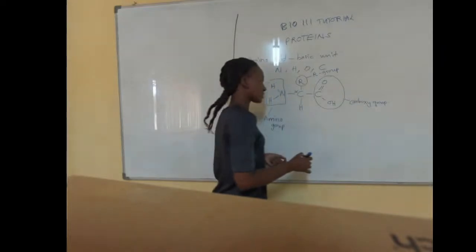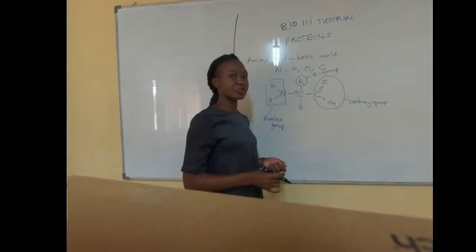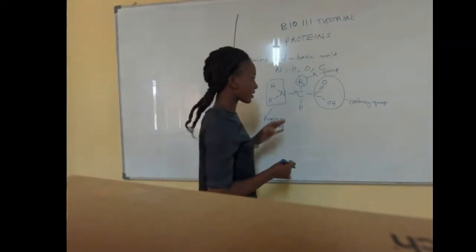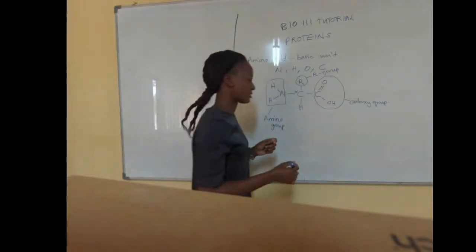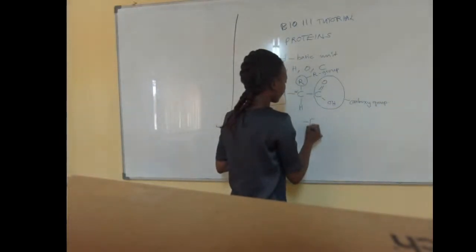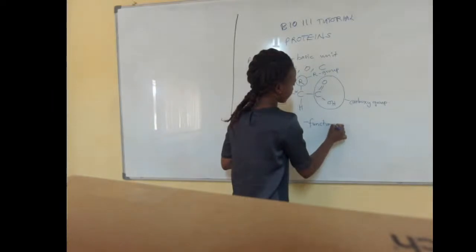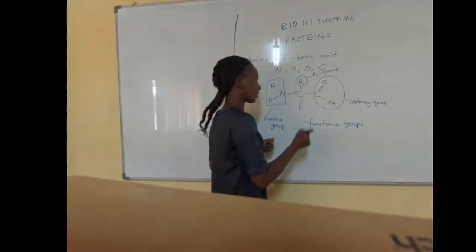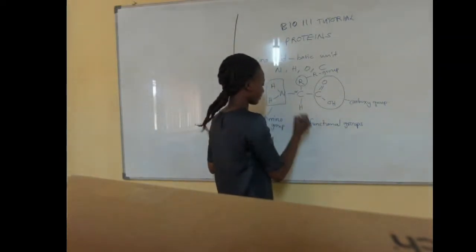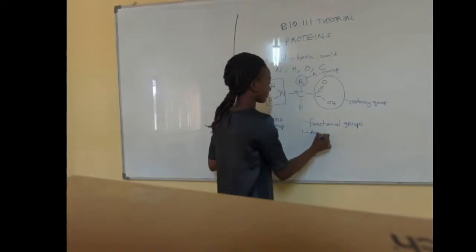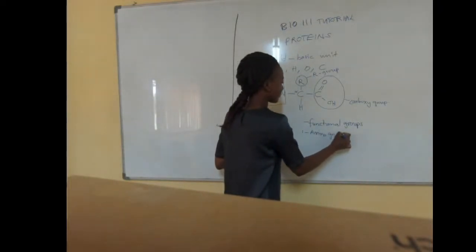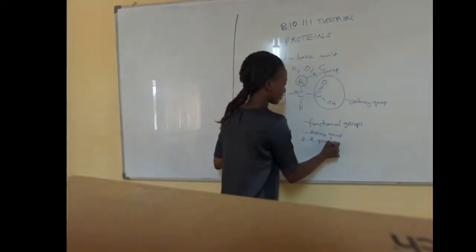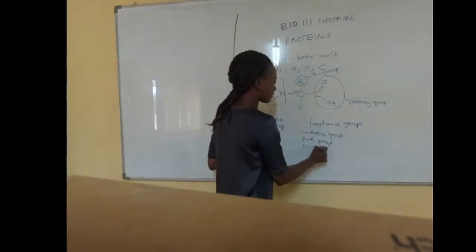The question further asks us to state the functional groups of amino acids. Functional groups are groups of molecules or atoms that give characteristic functions. The functional groups in amino acids are: one, the amino group; two, the R group; and three, the carboxyl group.